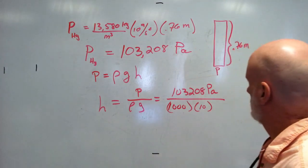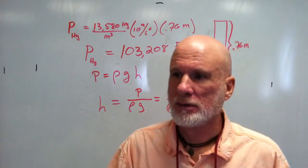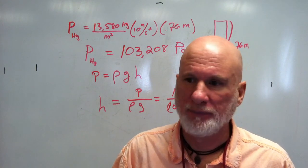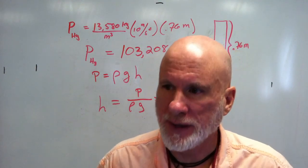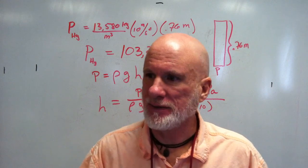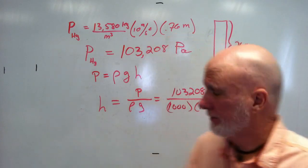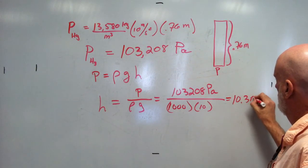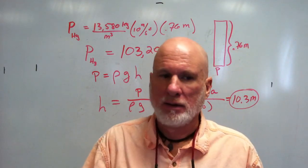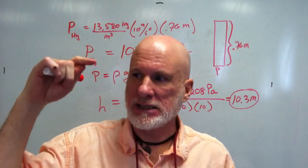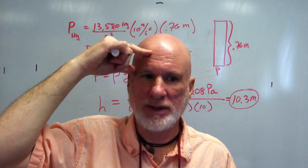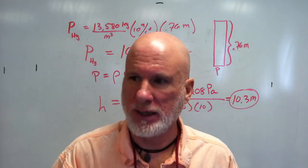So that's 103,208 divided by 1,000 times 10, which equals 10.3 meters. So 0.76 meters of mercury is equivalent to 10.3 meters of water.